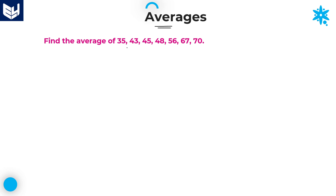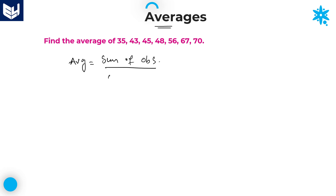Find the average of 35, 43, 45, 48, 56, 67, and 70. As we all know, average is equal to sum of observations divided by number of observations.